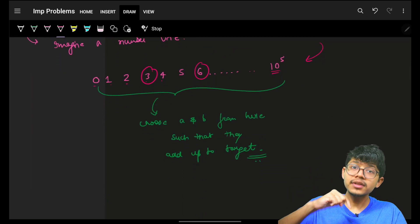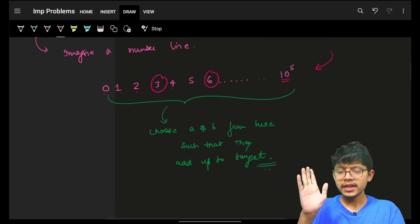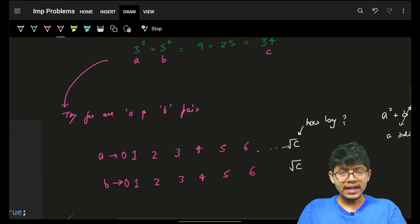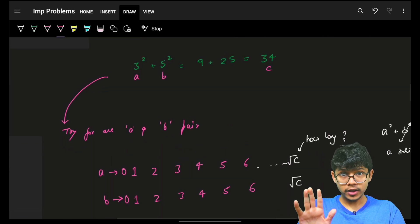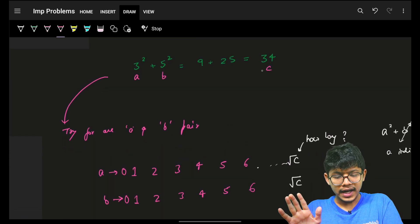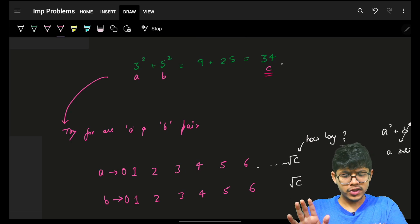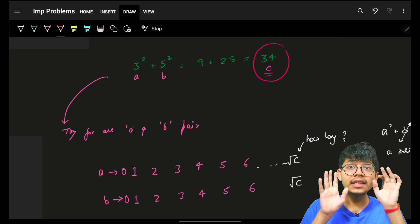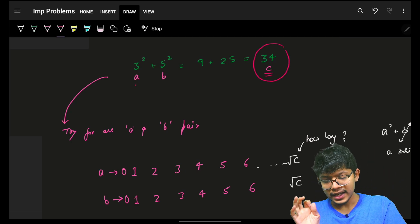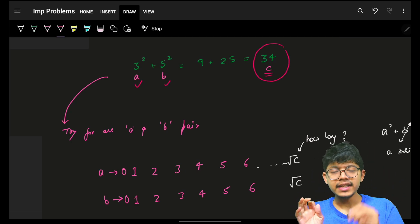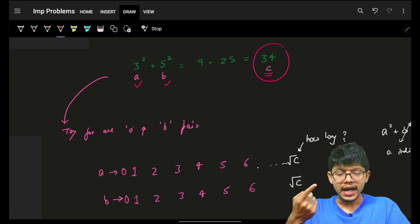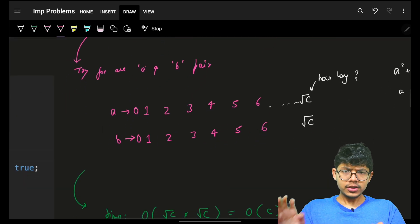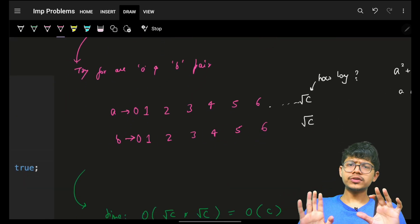That's the reason this problem is similar to the Two Sum problem. Let's take an example: c is 34, which is the only thing given to you. You just have to tell whether there exist any a and b whose squares add up to c.